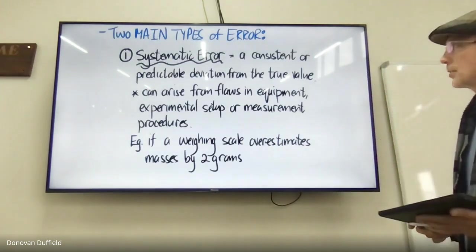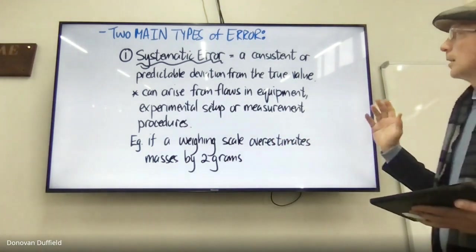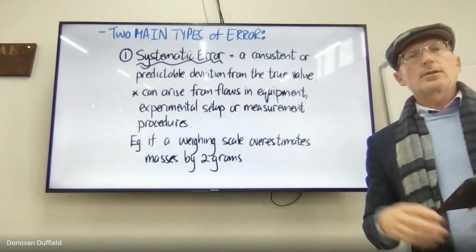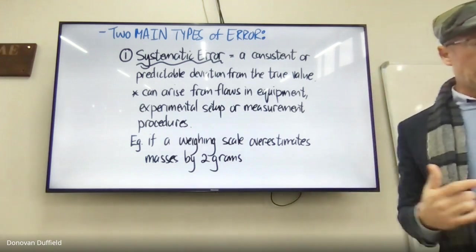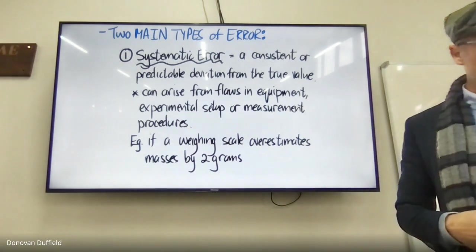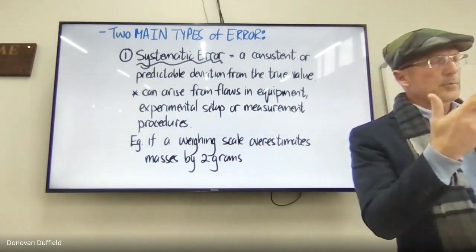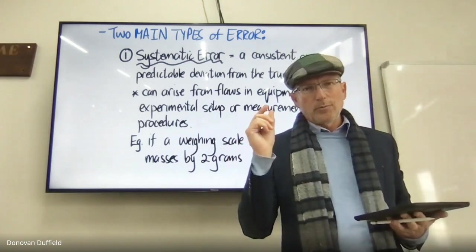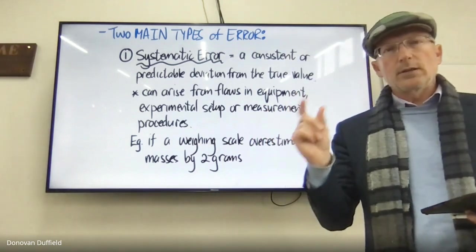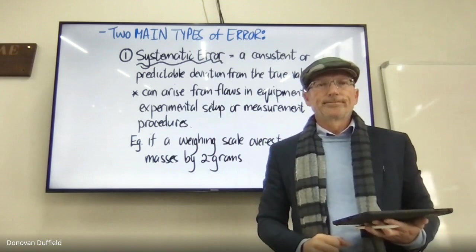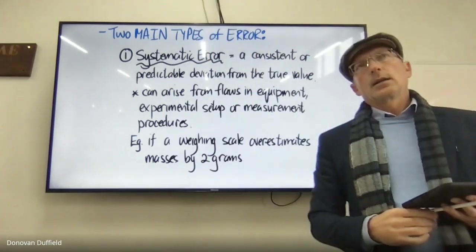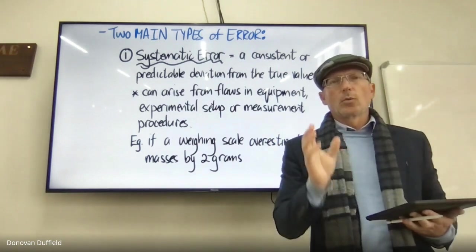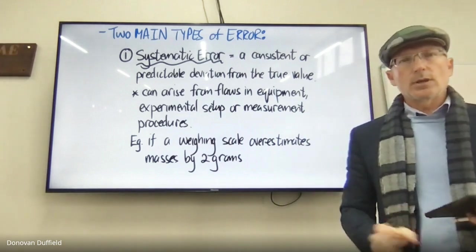There are two main types of error. A systematic error is a consistent or predictable deviation from the true value — it's constant, arising from flaws in equipment, experimental setup, or measurement procedures. For instance, if I don't zero my scale and it reads 0.2 grams at the start, then every single measurement will have an error of 0.2 grams. That's a systematic error.